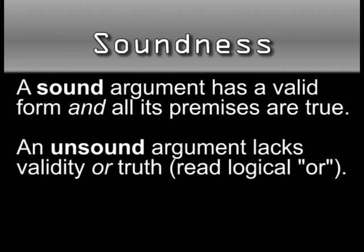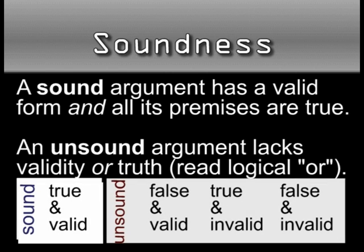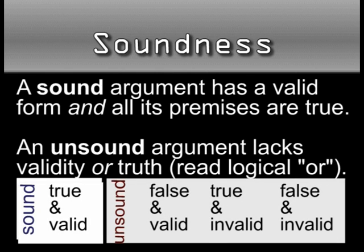Unsound arguments include: an invalid argument with true premises, a valid argument with one or more untrue premises, and an invalid argument with untrue premises. Only a valid argument with true premises is sound.